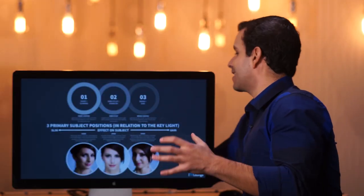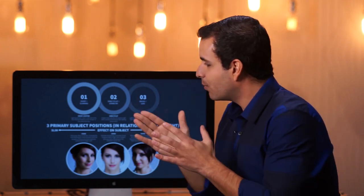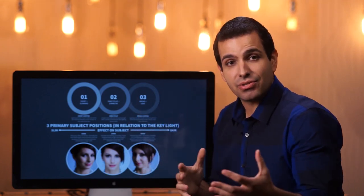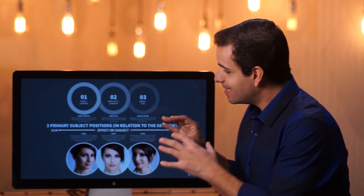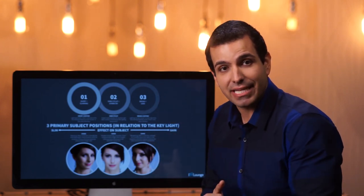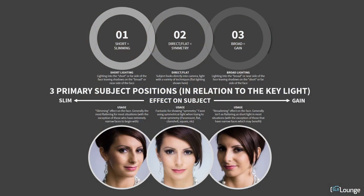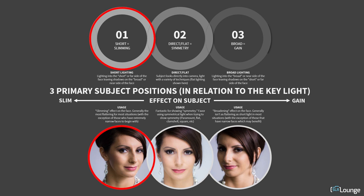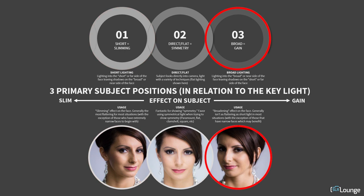This is one of the last things we consider when positioning our subject in relation to where our key light is coming from — the overall effect we want in the image. If we want symmetry and that perfect beauty look, direct flat and symmetrical light techniques are wonderful. If we want to slim the face, short lighting is fantastic. And if we want to broaden someone who has very narrow features, we would use broad lighting. Hopefully that all makes sense. Let's head on to the next video.